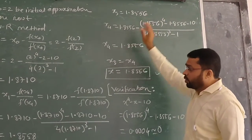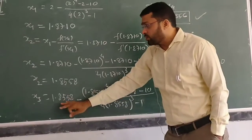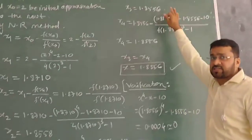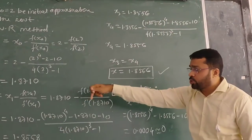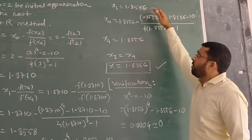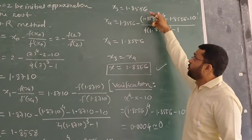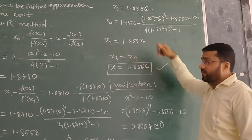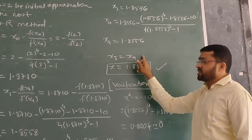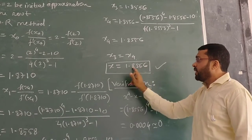You can stop the iteration because these two are nearly equal, the consecutive values x₃ and x₄. The difference is 0.0002. So the value of x₃ is the same as x₄: x = 1.8556.